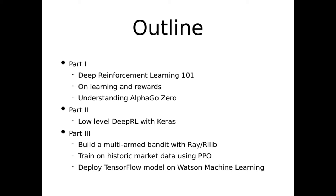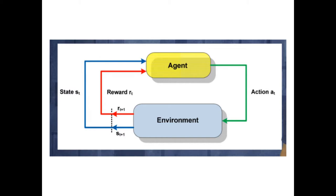In the last part we use Ray and RLlib to train a so-called multi-armed bandit with historic market data to create a trading bot. As RLlib uses TensorFlow and PyTorch under the hood, we can deploy the generated TensorFlow model on Watson Machine Learning to serve our users.